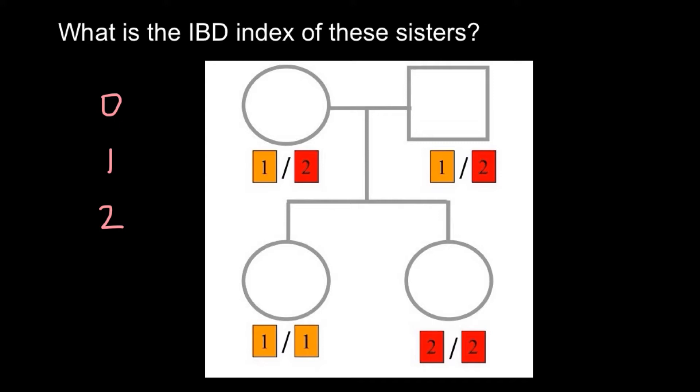Let's take a look at this female. She got one allele from her mother. Can she get the second allele also from her mother? Of course not, because for one locus we can only get one allele from one parent and another allele from the second parent. So the second allele came from the father.